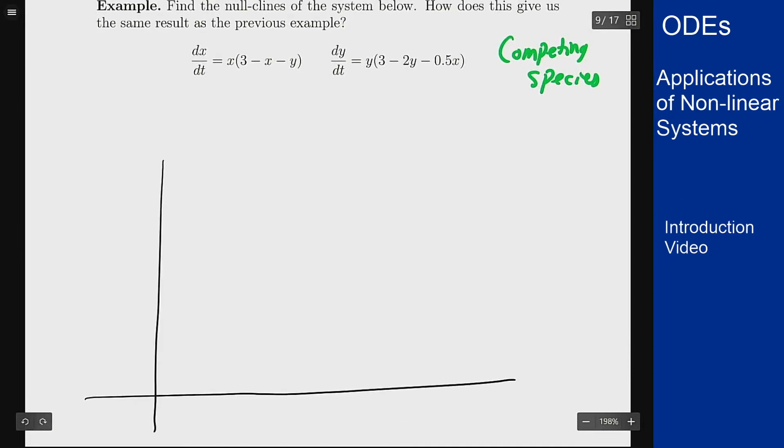Now the nullclines are going to come out of the same process we used to find equilibrium solutions. So in terms of the dx/dt nullclines we get one for x equals 0, just because that's the first factor in the product, and one from 3 minus x minus y equals 0, or y equals 3 minus x.